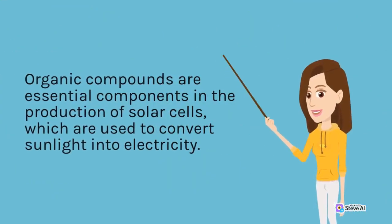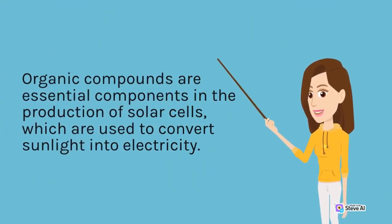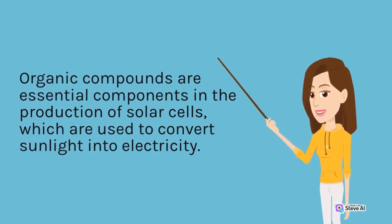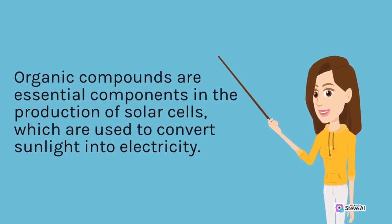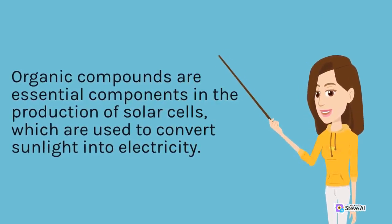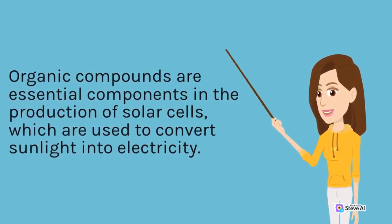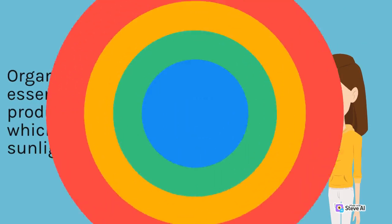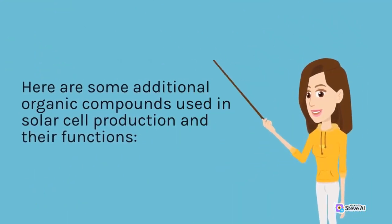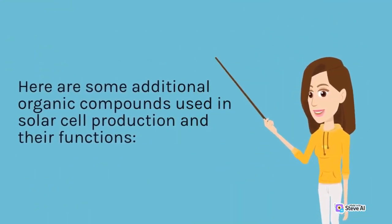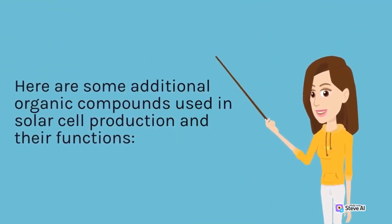Organic compounds are essential components in the production of solar cells, which are used to convert sunlight into electricity. Here are some additional organic compounds used in solar cell production and their functions.